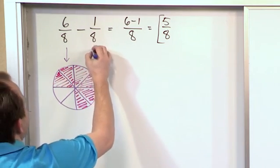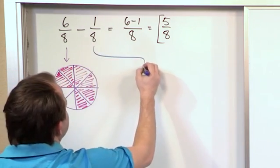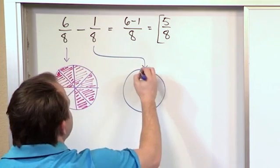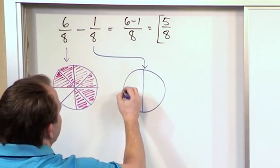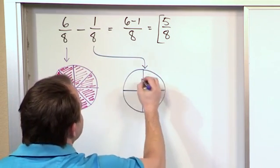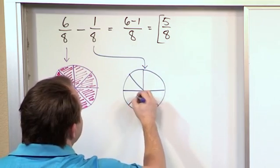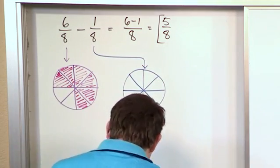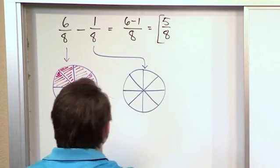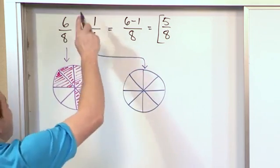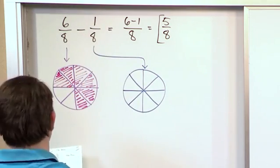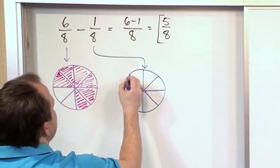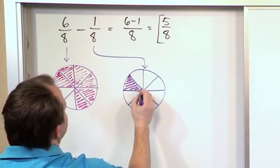Now from that, I'm trying to subtract 1 eighth. Again, my pizza is cut into eight slices, so I'm going to draw a big plus and then a big X that cuts it into eight slices. Inside of that, I would like to represent 1 eighth, and because it's 1 eighth, I'm just going to shade one of these pieces. So this is 1 eighth.